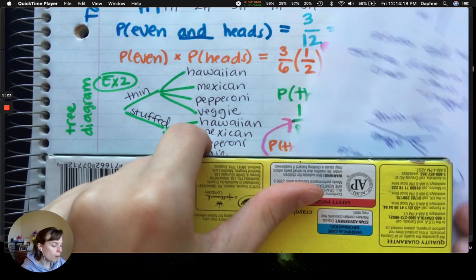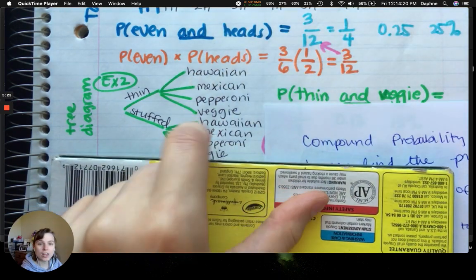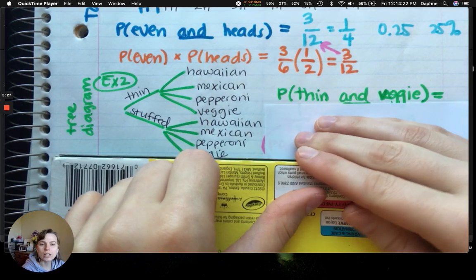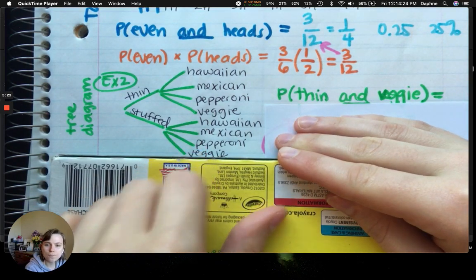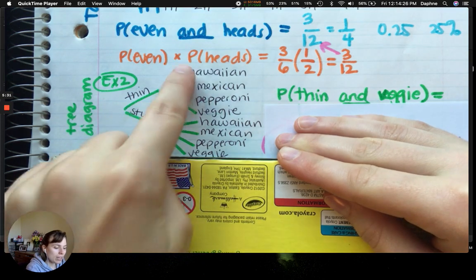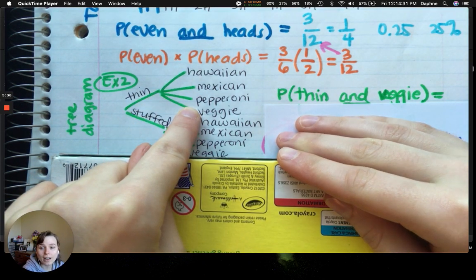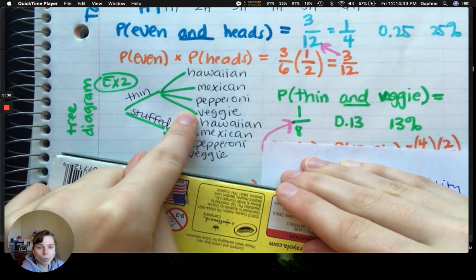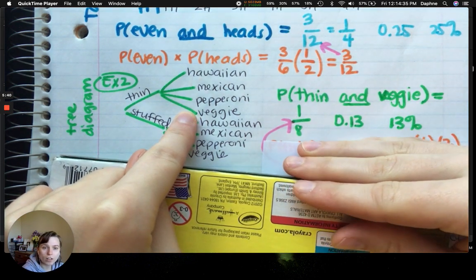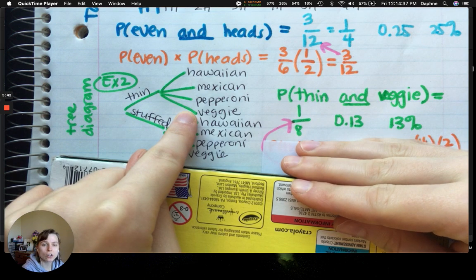So, if I want to find the probability of thin and veggie, ignore this, thin and veggie, how many of these 8 options are thin and veggie? There's only 1 out of 8. So, doing that, you get 1 eighth is 0.13, so 13 hundredths, and then 13%.